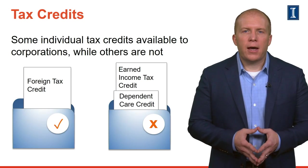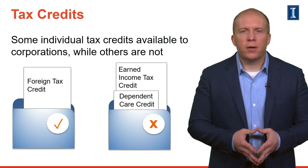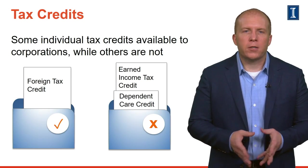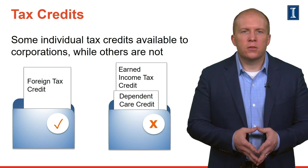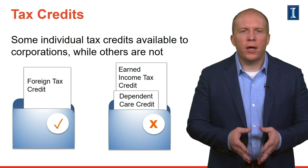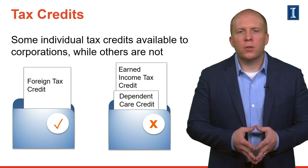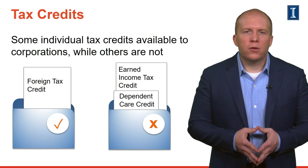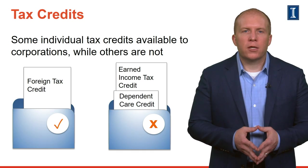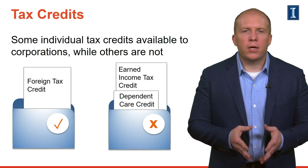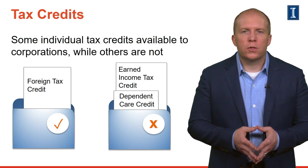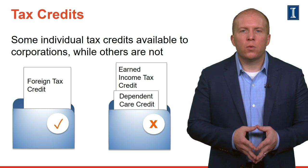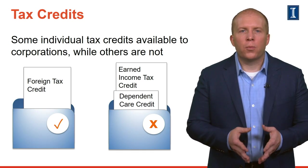Finally, some of the tax credits available to individual taxpayers, such as the foreign tax credit, can also be claimed by corporate taxpayers. However, other credits, such as the dependent care credit and earned income tax credit, are not applicable to business entities. Overall, you should now understand the general structure of the corporate tax formula and how it compares to the formula for individuals. The remaining lessons in this module will focus on more specific features of the federal corporate income tax.